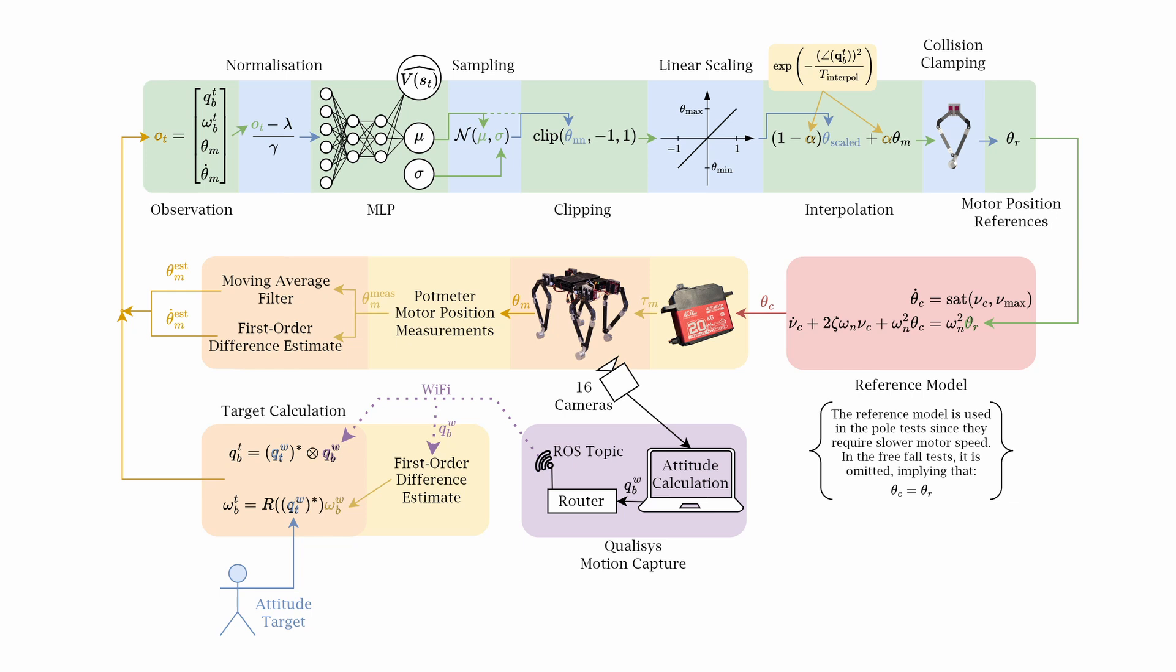In addition to a full-speed policy we incorporate a saturated second-order reference model to train and deploy a policy with reduced joint velocities. We find that adjusting the horizon and inference frequency of PPO is an effective way to relearn a fast problem for slow dynamics.